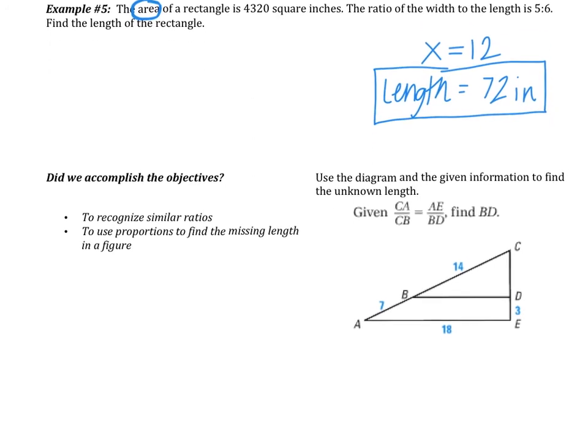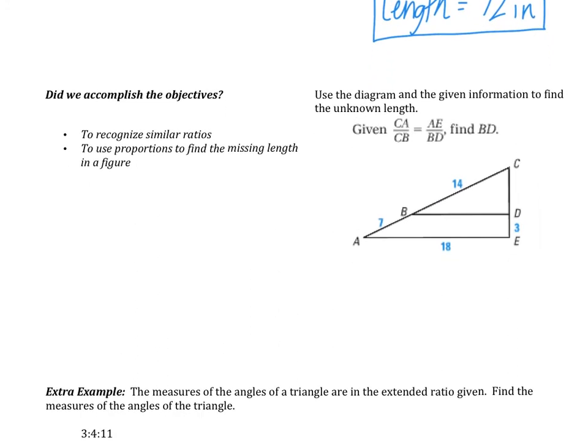Okay, last thing is the objective. Are you able to recognize similar ratios? Are you able to use proportions to find missing links? Try out this problem here. It's as simple as plugging in. What is CA? What is CB? What is AE? What is BD? And now set up the proportion and solve. I'll check this one in class tomorrow. Good luck!